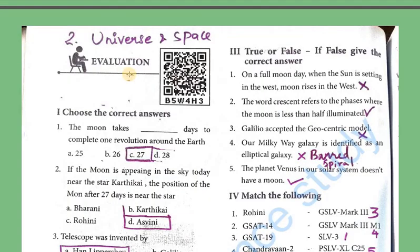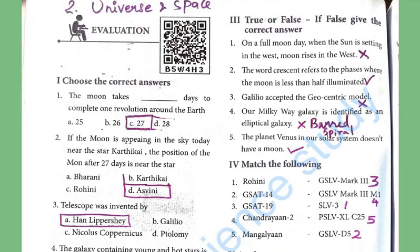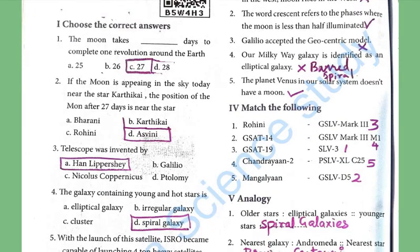Next lesson: Universe and Space. Choose the correct answer. The moon takes 27 days to complete one revolution around the Earth. Second question: If the moon appears today near the star Karthikei, the position of the moon after 27 days will be near the same star.